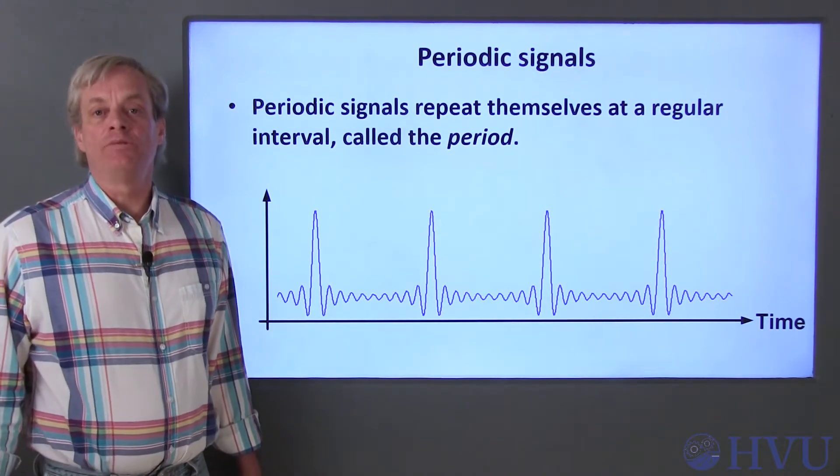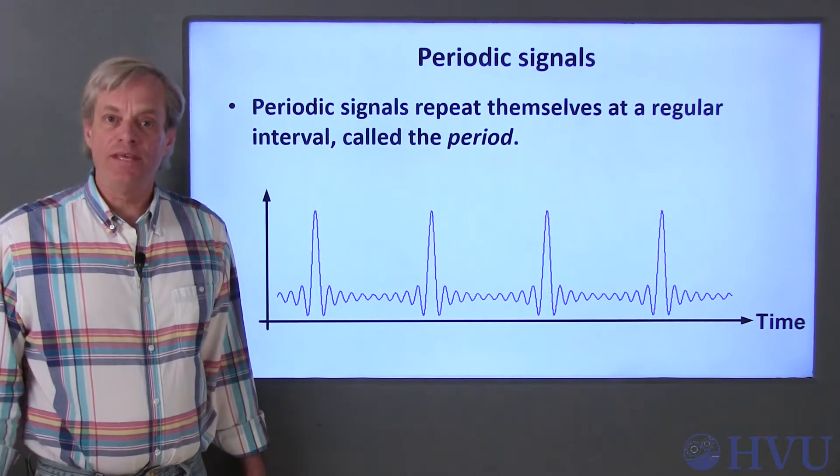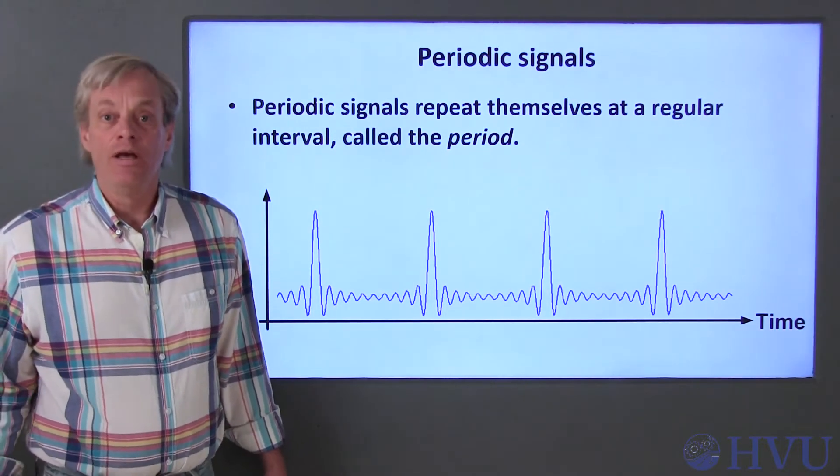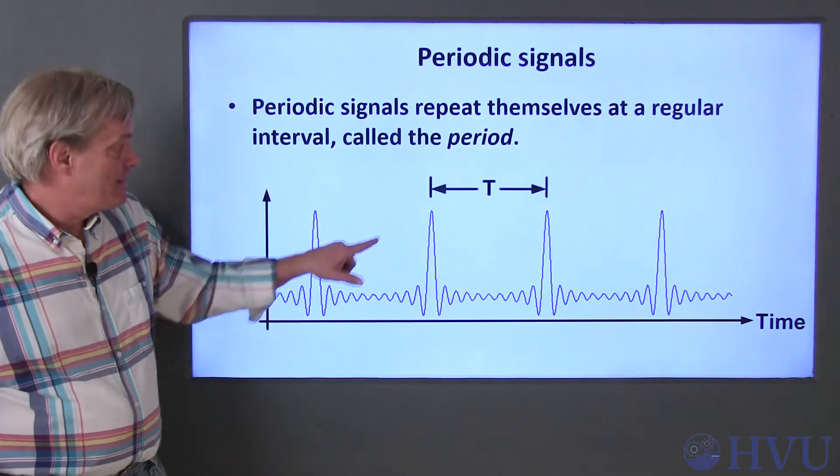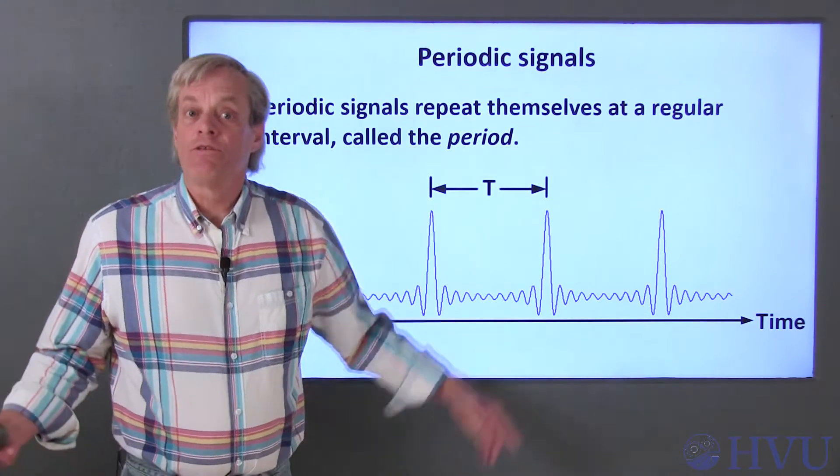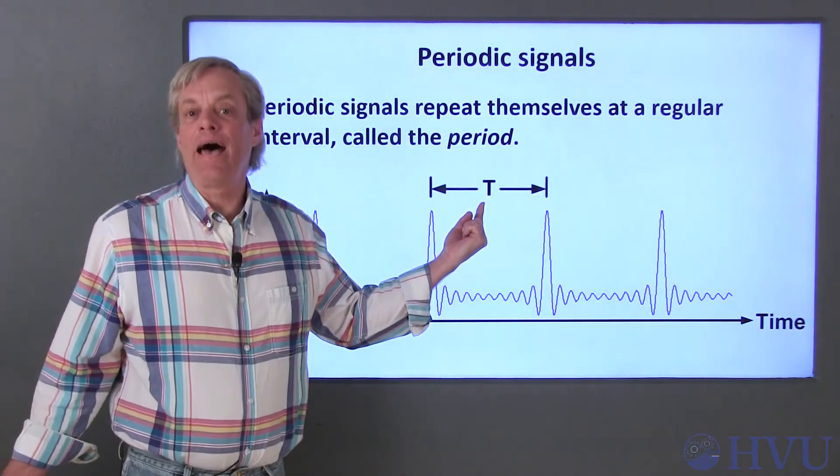Waveform generators create what are called periodic signals. That just means that the shape of the signal repeats itself at a regular interval. For example, this is a periodic signal. It takes this amount of time for the signal to repeat itself. The period is generally denoted by a capital T.